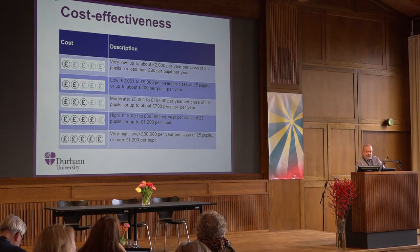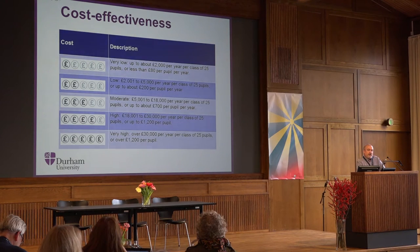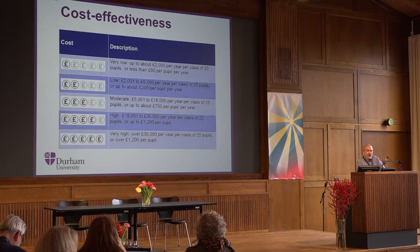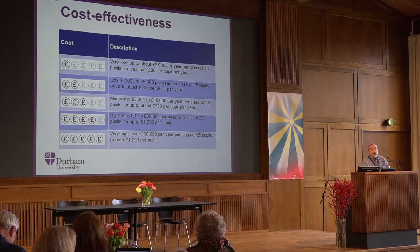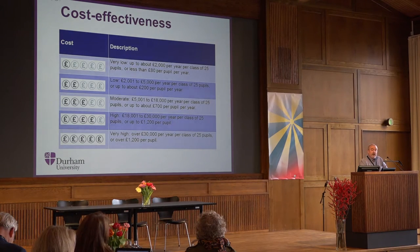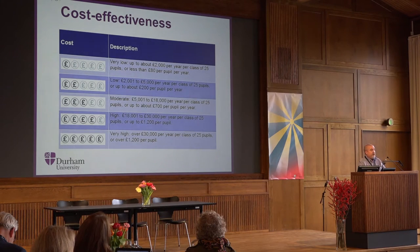Cost effectiveness, as I mentioned, is set within the very specific framing of the pupil premium policy in England. We've looked at the kinds of resources and sums that schools are now responsible for in terms of the education of disadvantaged pupils and set the scale at that level. The amounts might seem — I don't know how this works in other systems — it will depend a lot on how much responsibility is devolved at school, local authority or municipality level in terms of spend, as to how relevant some of this information will be.